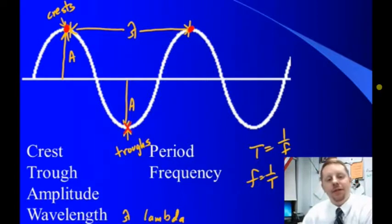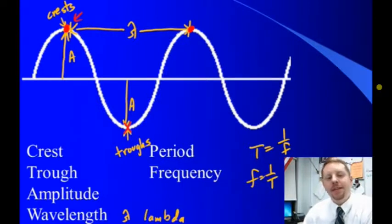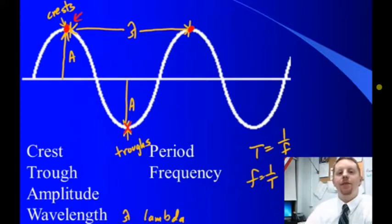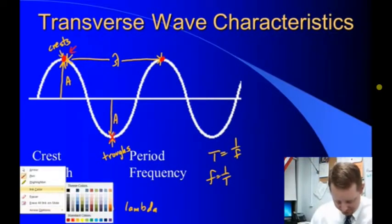That point would be 180 degrees out of phase with our initial point up there. So, in phase means the same point on a different wave. Out of phase, not the same point. And if it's 180 degrees out of phase, it's exactly between those two points.